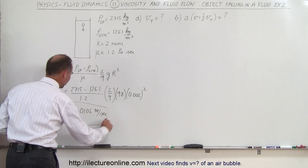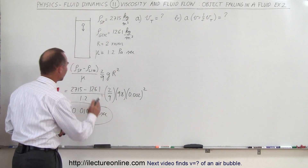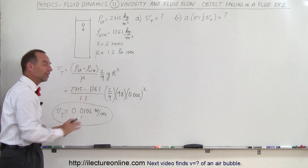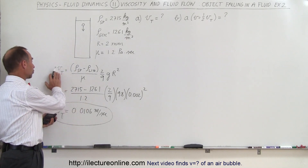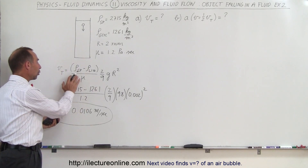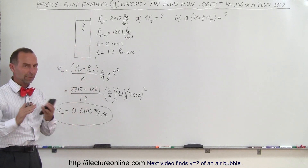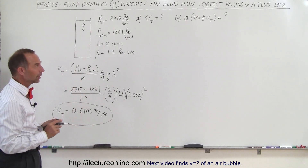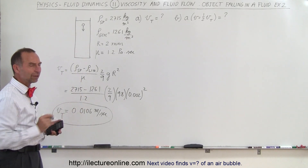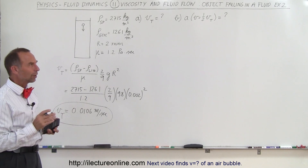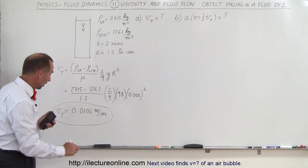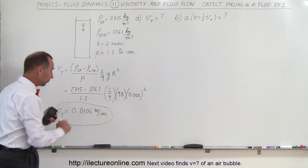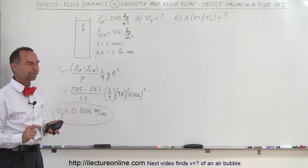That's pretty straightforward. Once you have this equation it's very easy to figure out either the terminal velocity or the viscosity depending on what's given. But now we're trying to find the acceleration when the velocity is half the terminal velocity — half this value right here.